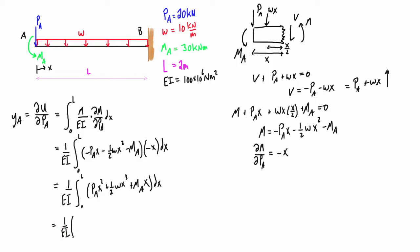So we have this 1 over EI. This is going to be times, this becomes 1 third x cubed and we sub in that L because zeros, we're going to subtract all zeros. So we get 1 third Pa L cubed, plus this x goes to x fourth times a quarter, and a quarter times a half is an eighth. So we have 1 eighth times w L to the power of 4, plus mA.